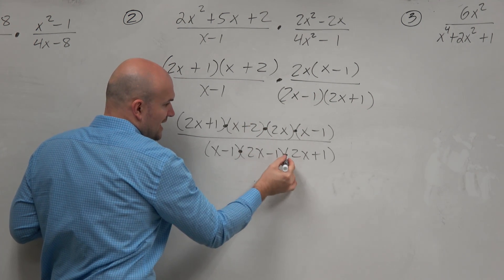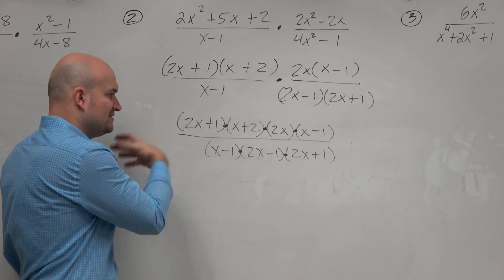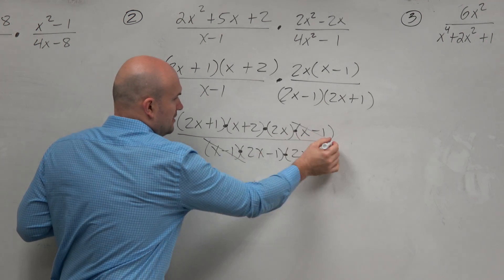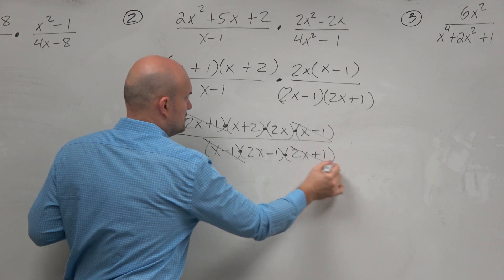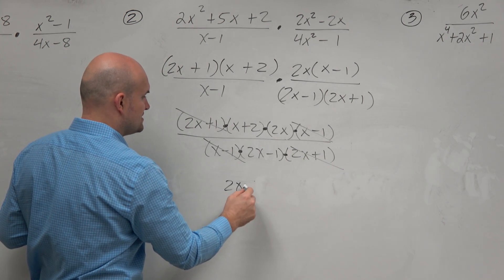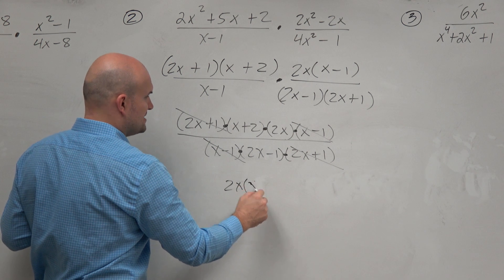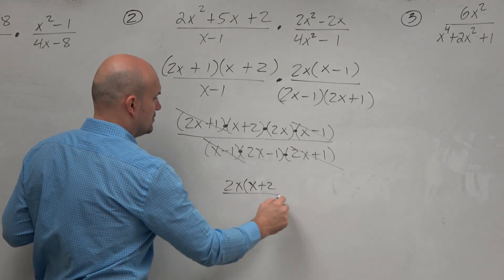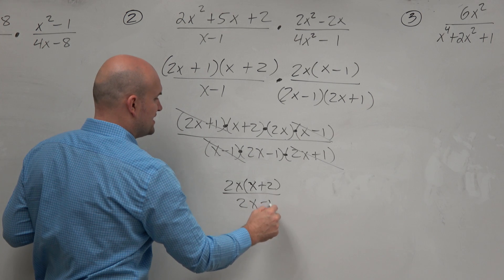Therefore, I can apply the division property where I have the same terms in the numerator and the denominator: x minus 1 and 2x plus 1. So I'm left with 2x times (x plus 2) all over (2x minus 1).